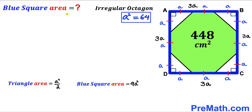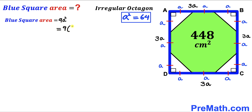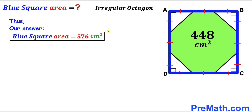For our final step, we calculate the area of blue square ABCD. We know the blue square area equals 9a², and our a² value is 64. So the area equals 9 × 64 = 576 cm². After all calculations, the blue square ABCD area turns out to be 576 cm².